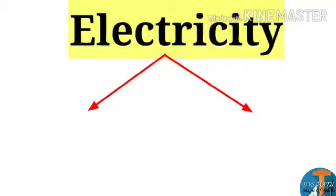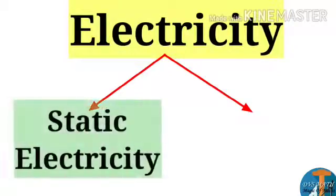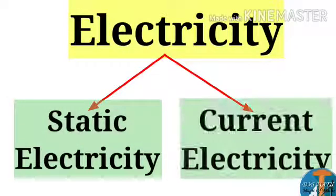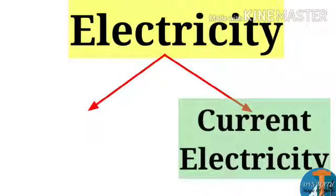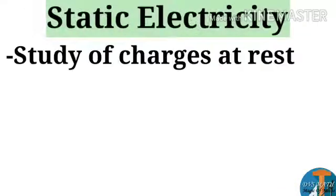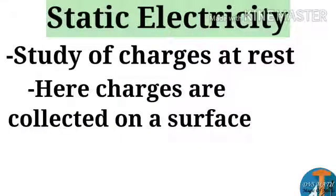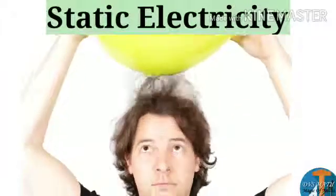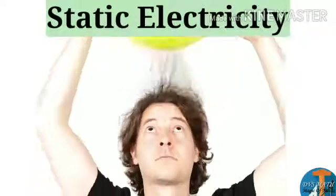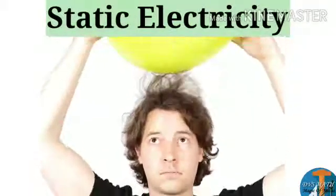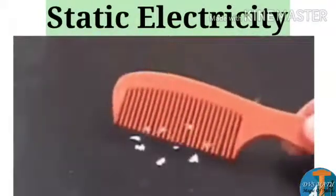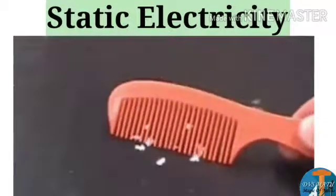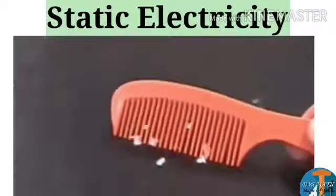Electricity is of two types: one is static electricity, another is current electricity. Static electricity is the study of charges at rest. Here charges are collected on the surface and it's caused by friction or rubbing. When we rub a balloon to hair, hair is attracted towards the balloon, and sheets of paper are attracted towards a comb.